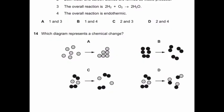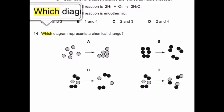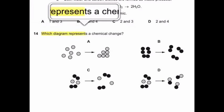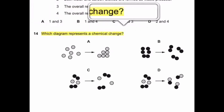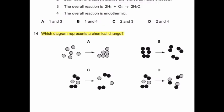Question 14: Which diagram represents a chemical change? Chemical change means formation of a new substance by chemical combination. So, option D is the correct answer.